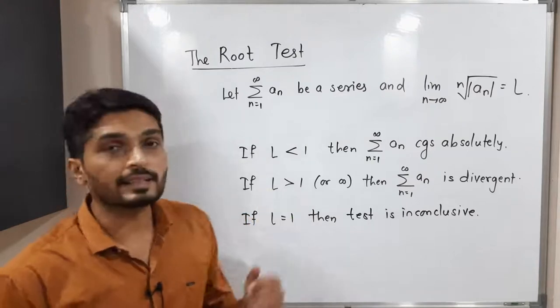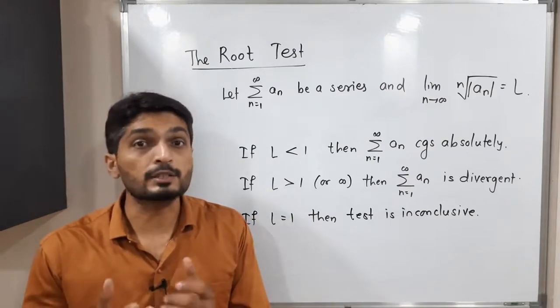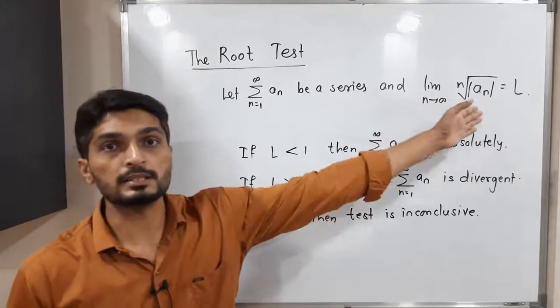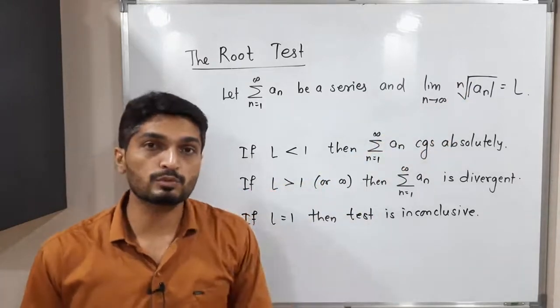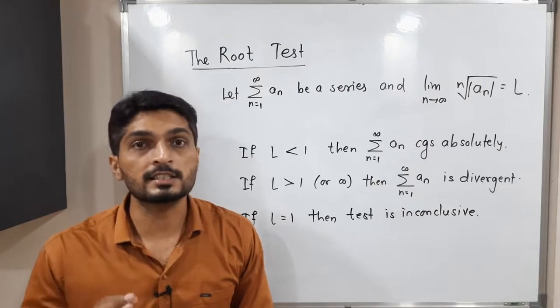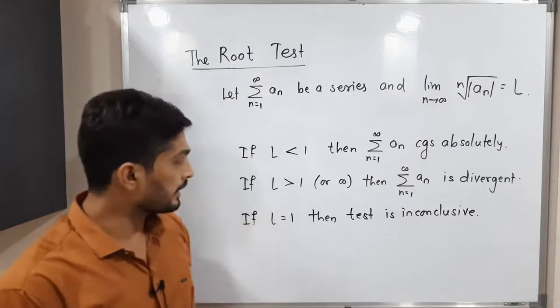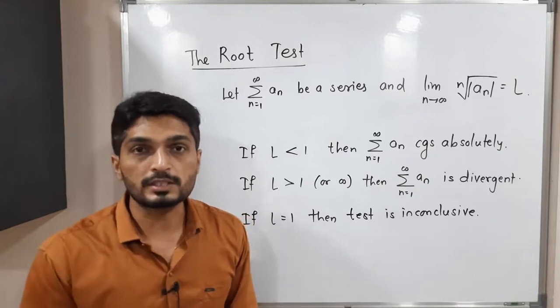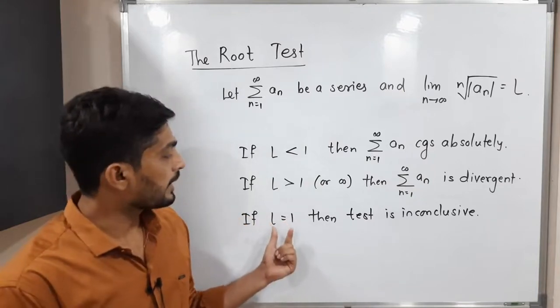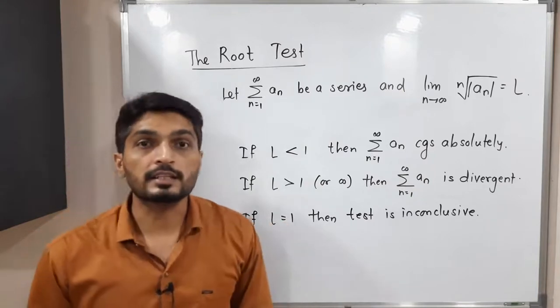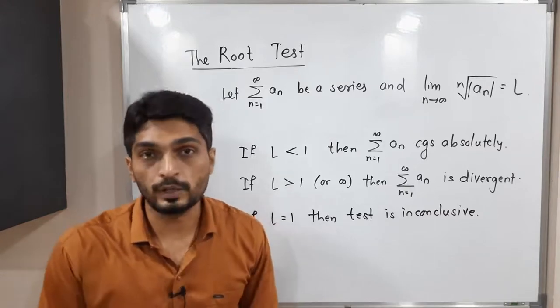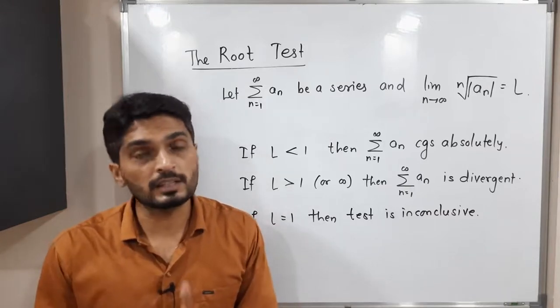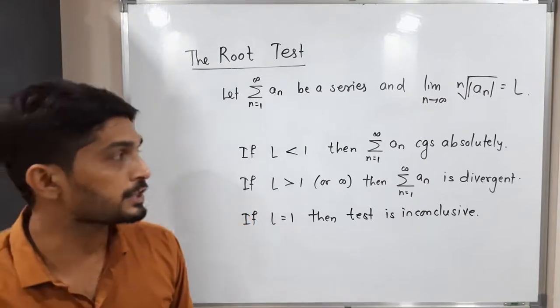If L is greater than one or its value is infinity, that means value of this limit is moving towards infinity, in that case we say the given series is divergent. And again, if the value of L is one, then we say the test is inconclusive. That means using this test, we cannot decide whether the given series is convergent or divergent.